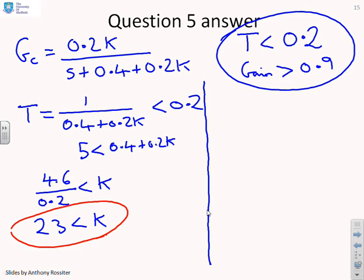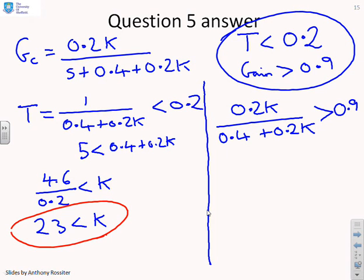Now let's go down here and look at the steady state gain. The steady state gain was 0.2 k divided by 0.4 plus 0.2 k. You can see that reading directly from the sheet. And we wanted this to be greater than 0.9. So we get 0.2 k has to be greater than 0.36 plus 0.18 k.